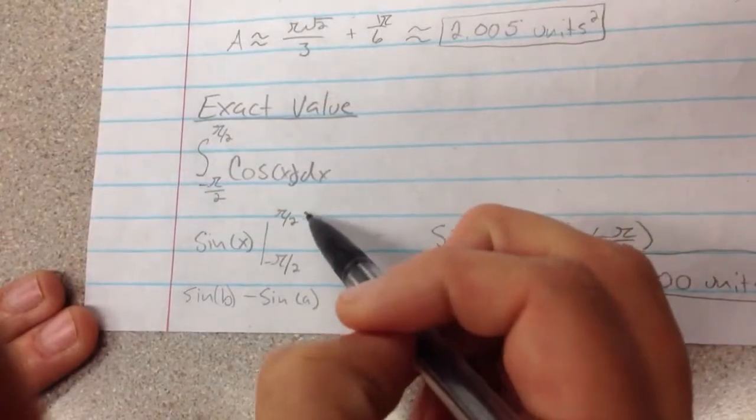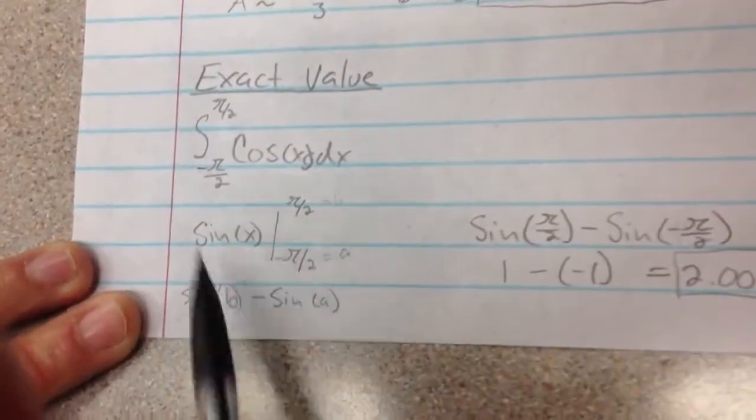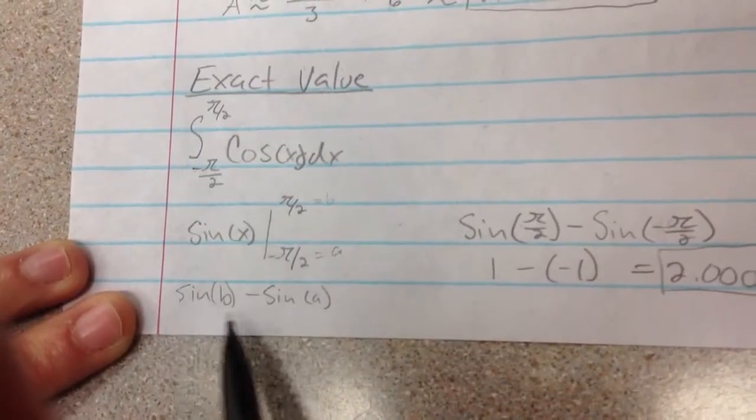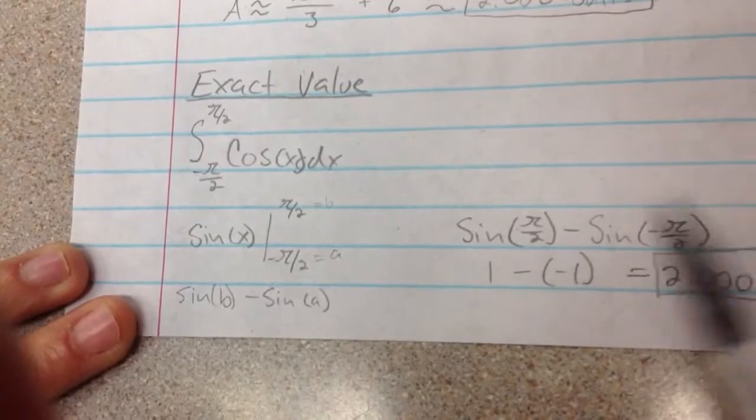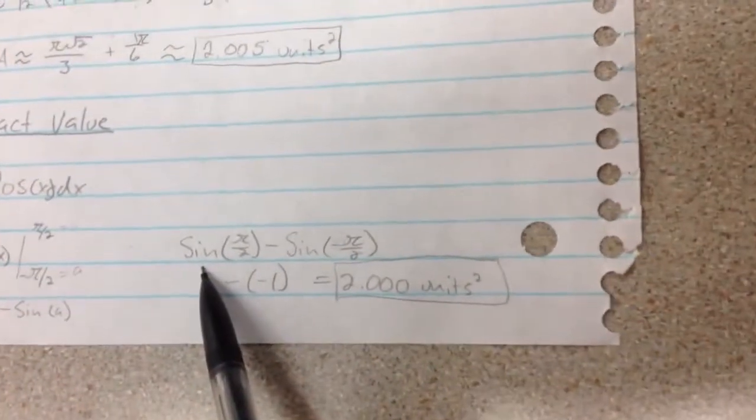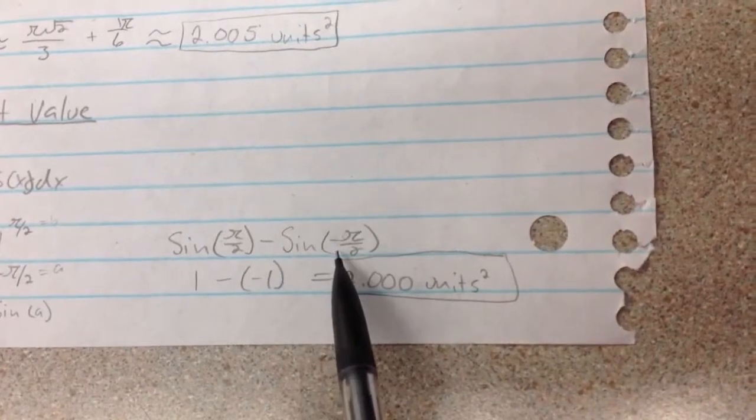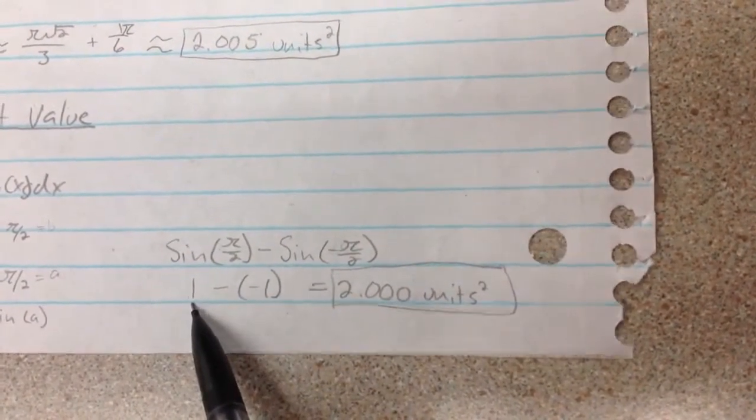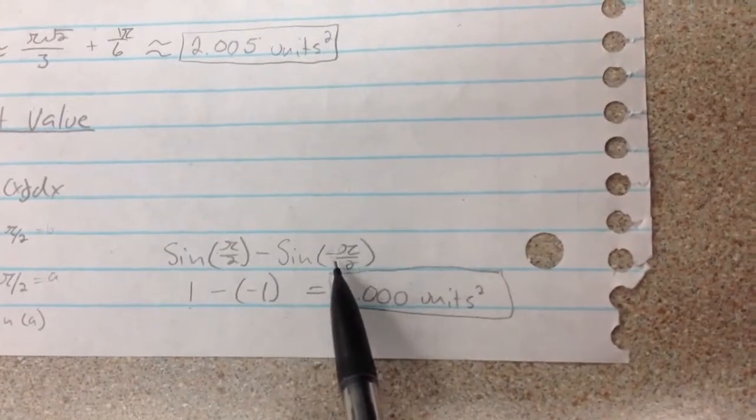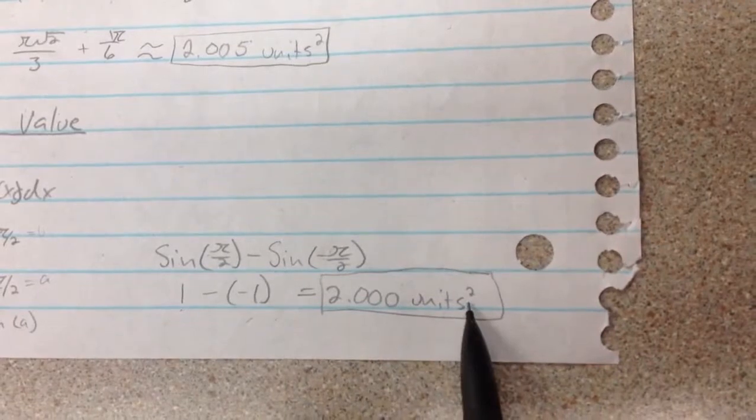And then it's going to be evaluated from negative pi over 2 to pi over 2. So at this point, where this is equal to b and this is equal to a, you are going to put this into this function here. So you're going to end up with sine of b minus sine of a, which over here is equal to sine of pi over 2 minus sine of negative pi over 2. So sine of pi over 2 is 1. And then sine of negative pi over 2 is negative 1. So that's going to give you 2 units squared.